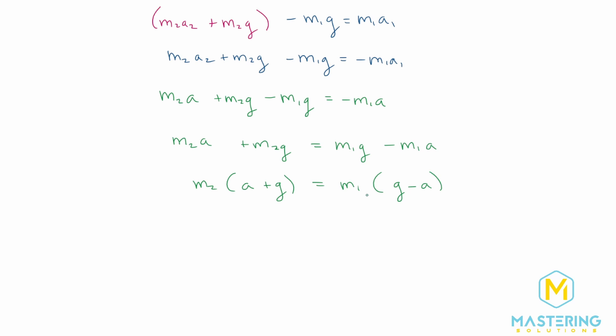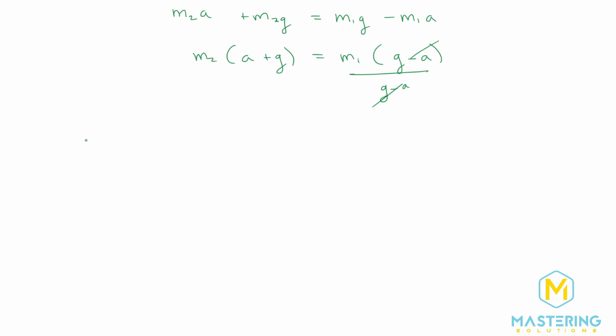So we have m2 with acceleration plus gravity will be equal to m1 with gravity minus acceleration. And now to solve for m1, we'll simply divide both sides by g minus a. So all of this led us to m1 is equal to m2 times acceleration plus gravity over g minus acceleration. And we can rewrite this a little bit differently. This is the exact same thing if we were to write it as this. So m1 is equal to m2 times g plus a over g minus a. So these two equations are the same thing, it's just expressed slightly differently.